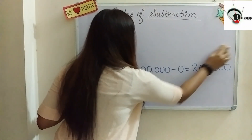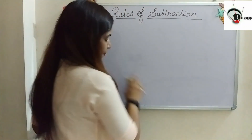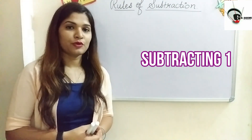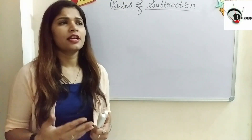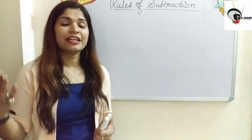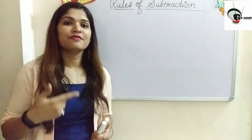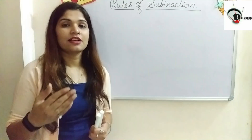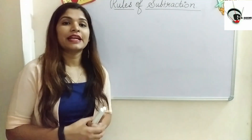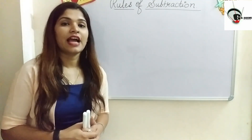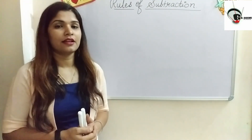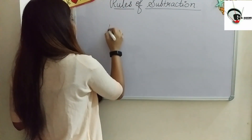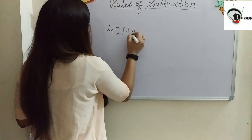The third rule is subtracting 1. When we subtract 1, 10, 100, or 1000 from a number, it is similar to what we did with addition in the previous video — except instead of increasing by 1 at that place value, we decrease by 1. Let us see with an example: suppose we have the number 42,936.